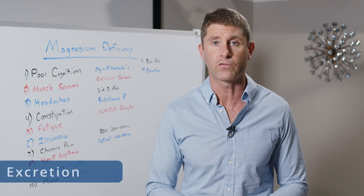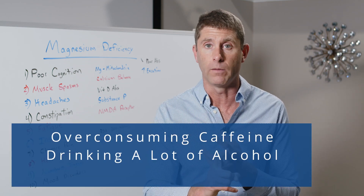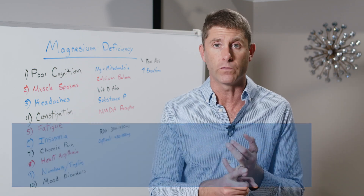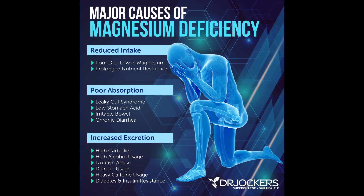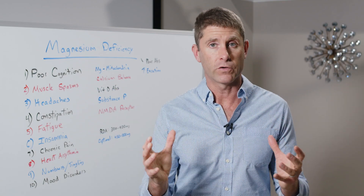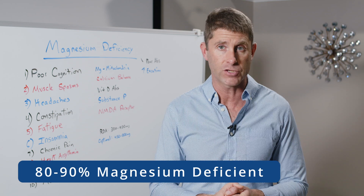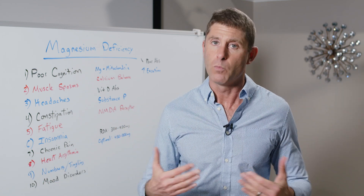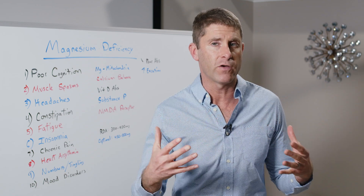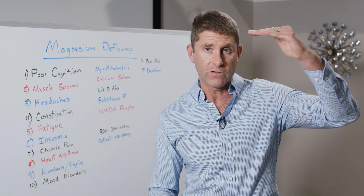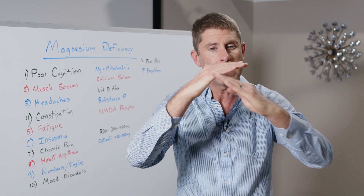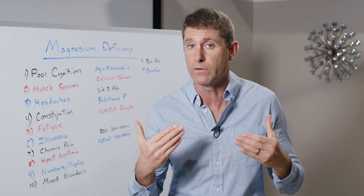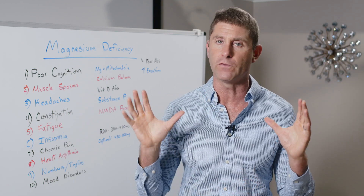We can also have too much excretion. Over-consuming caffeine, drinking a lot of alcohol, eating a lot of processed or high-carbohydrate foods, or taking certain medications — almost all medications cause us to excrete more magnesium. Research says roughly 80 to 90% of our population is magnesium deficient on a chronic basis. Even healthy people go through periods of deficiency, because the more stress you're under, the more magnesium you use. Supporting your magnesium levels is super critical for overall health.